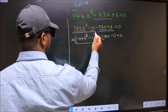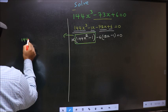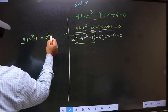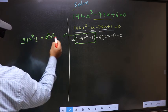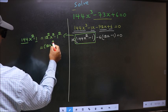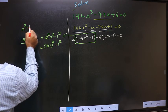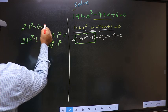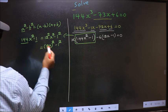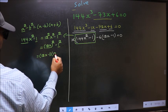Now I will simplify the quadratic 144x² minus 1. In place of 144, write 12², so we have 12²x² minus 1², which is (12x)² minus 1². We apply the formula a² minus b² equals (a minus b)(a plus b), where a is 12x and b is 1, giving (12x minus 1)(12x plus 1).